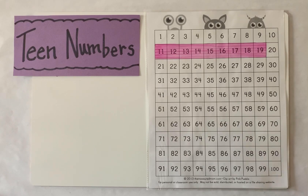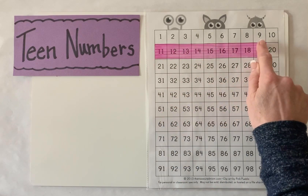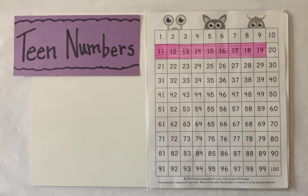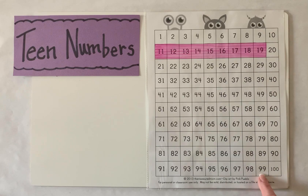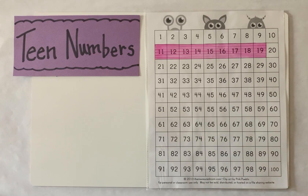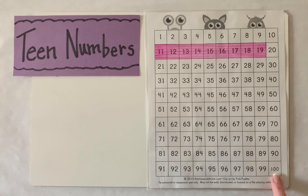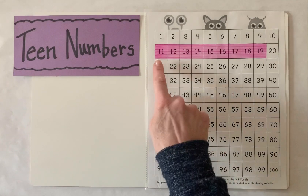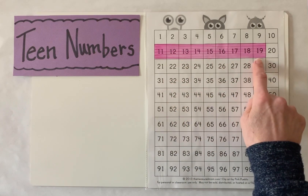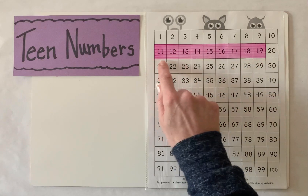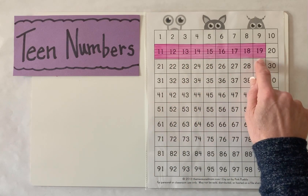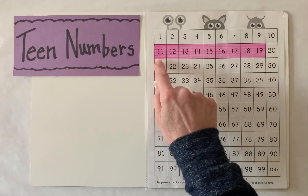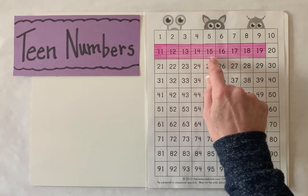Let's look at our 100s chart. Notice that the numbers 1 through 9 are made up of only one number, or one digit. The numbers 10 through 99 are made up of two numbers, or two digits. And our number 100 is made up of three numbers, or three digits. The teen numbers are very special because these are the numbers where we first begin using our two digits, and they're also special because each of these numbers begins with a 1.